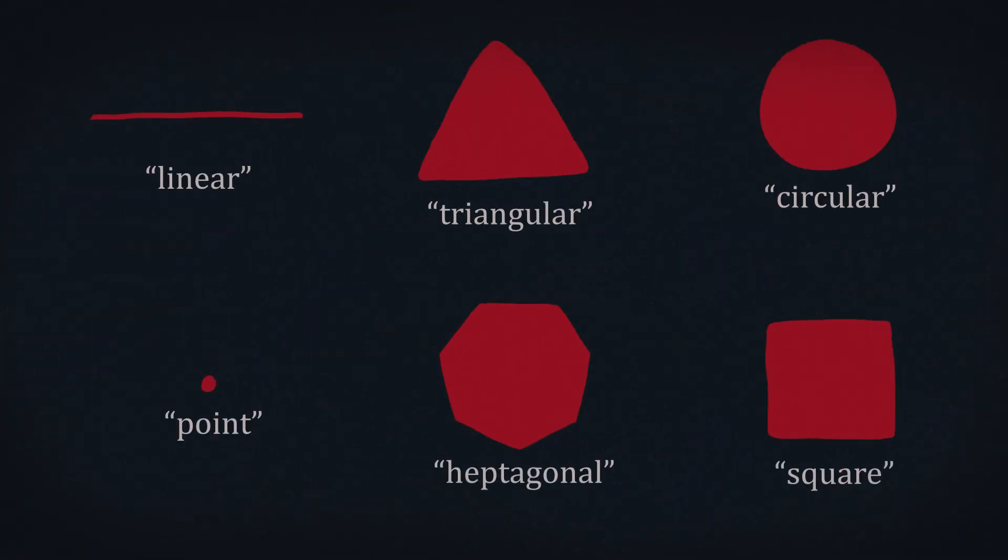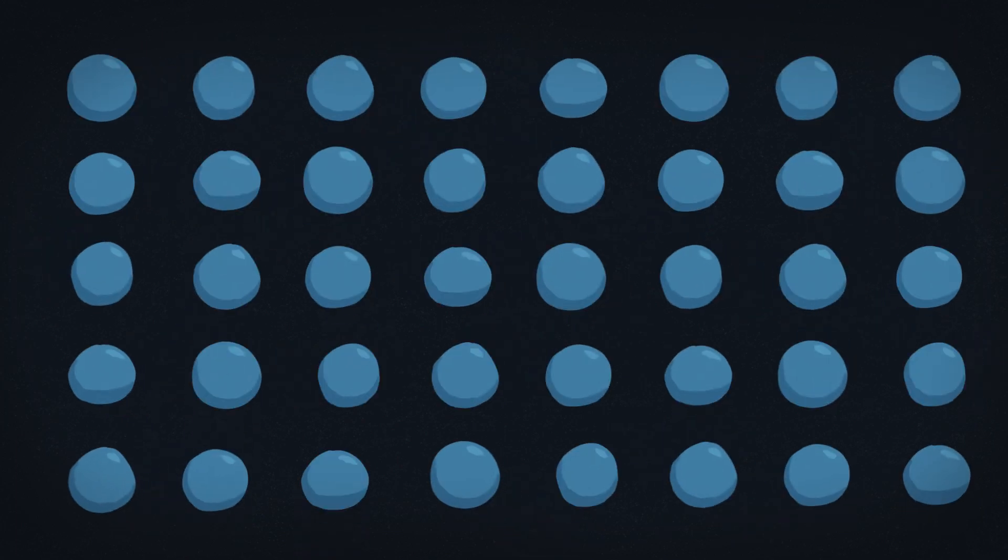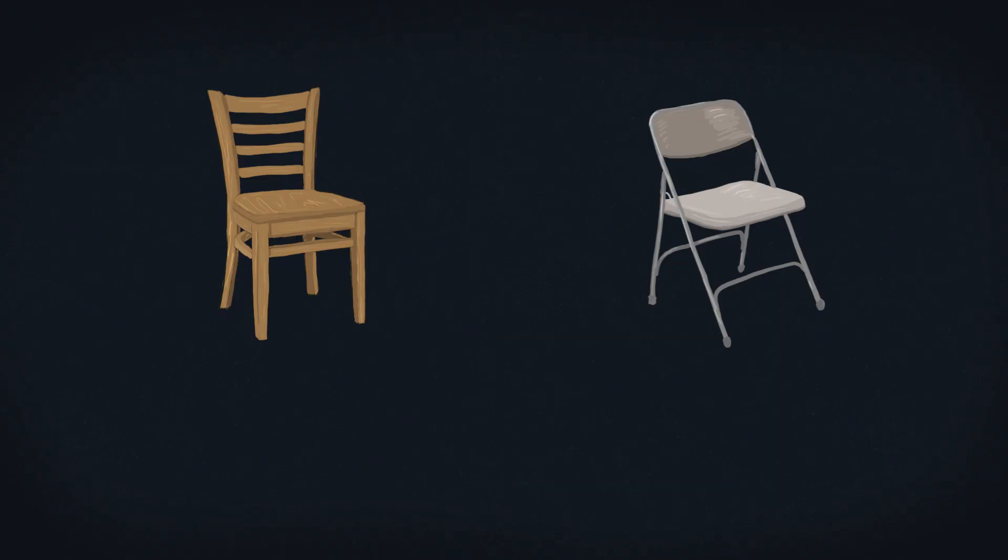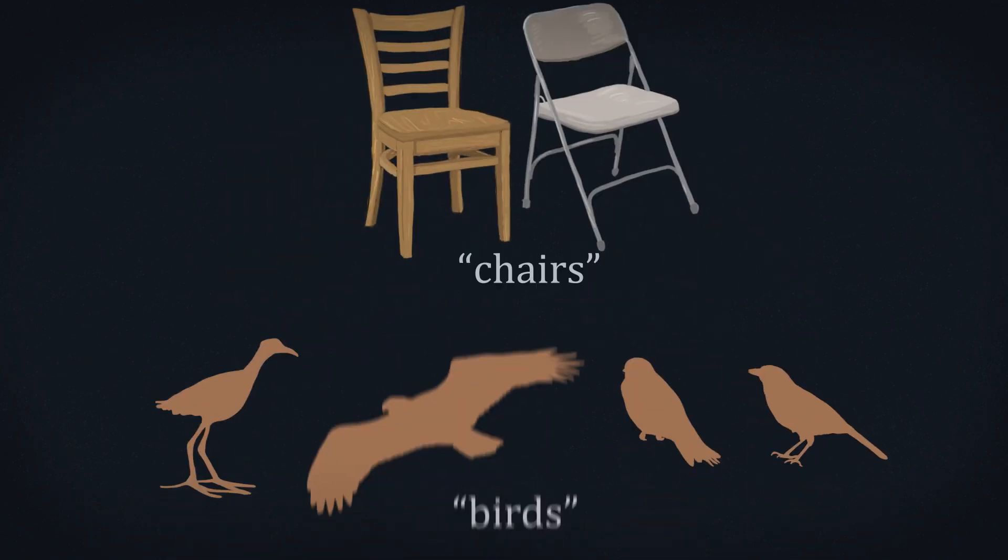And we can represent lots of properties with words. Like redness, they can have shapes, things can be cold, scattered, or patterned. They can be wooden or wet. Even though two things are shaped differently and are made of different materials, we may still call them by the same name because of other characteristics.